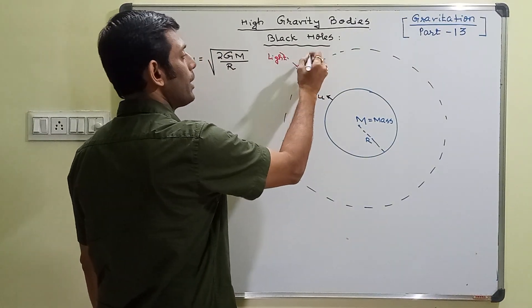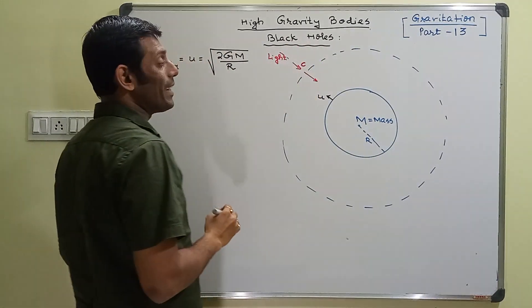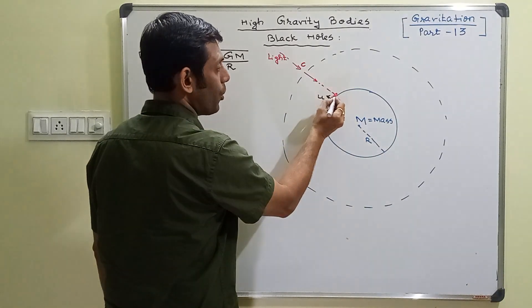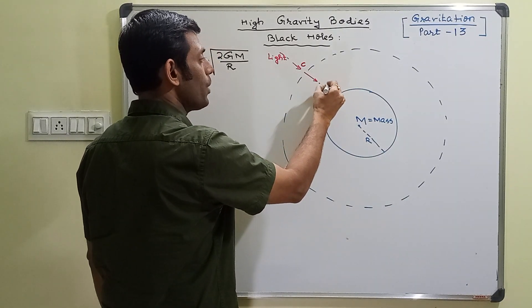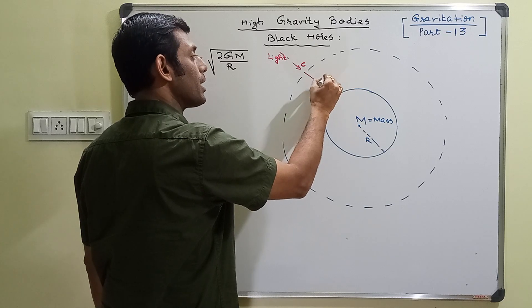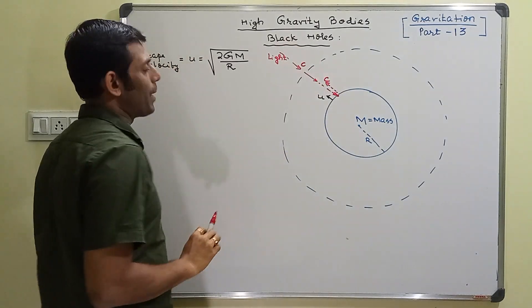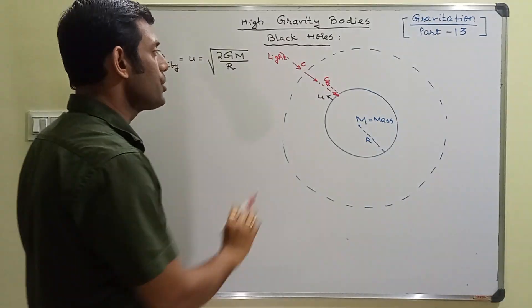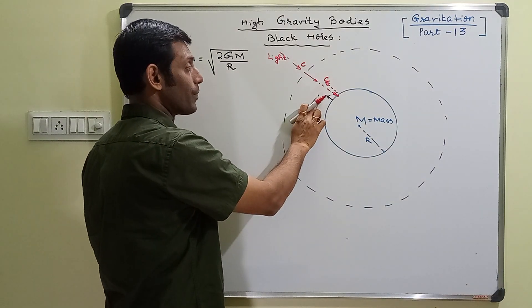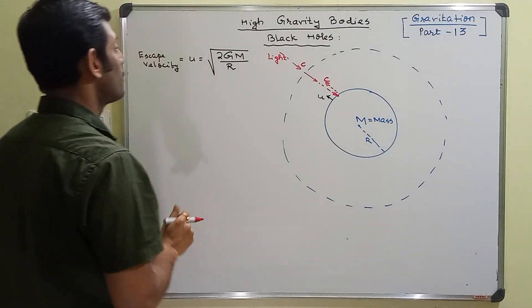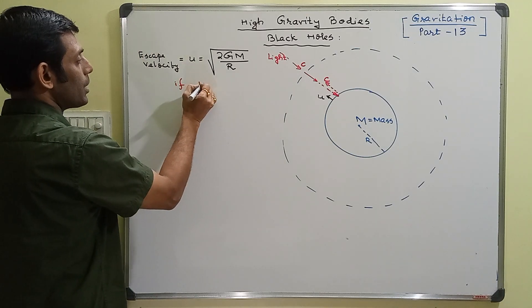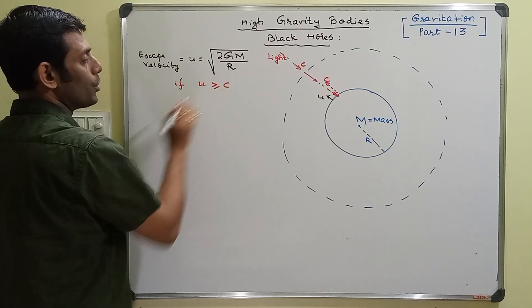With this speed if they get in and fall on this particular surface, and if they try to escape back by reflection, if light wants to reflect back, what if this escape velocity is more than c? What if this U is greater than or equal to c?